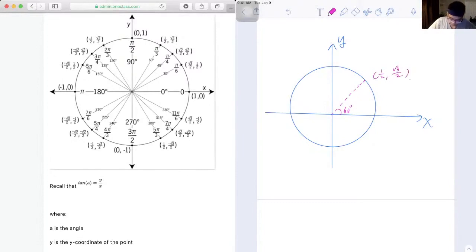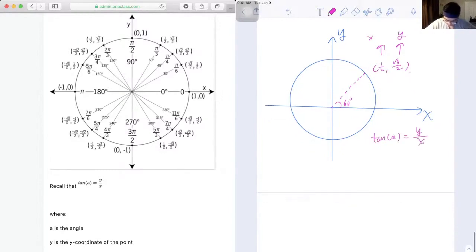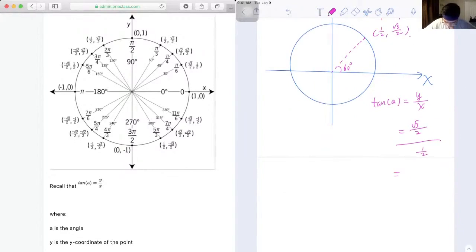Okay, and that's the x coordinate, and that is the y coordinate, and we know tangent θ is just equal to y over x, which is going to be √3/2 over 1/2. So that's going to be equal to √3/2 times 2, which is going to give us √3.